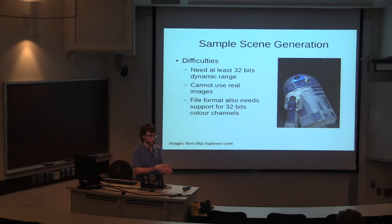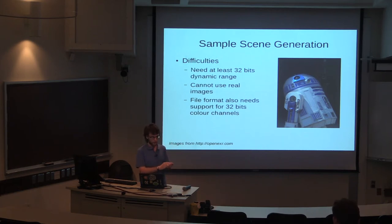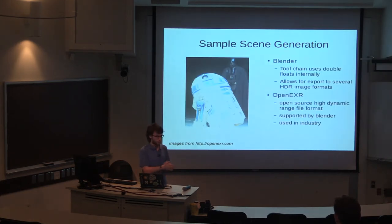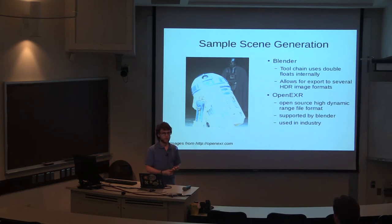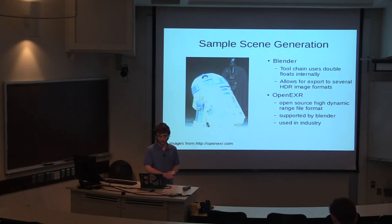For the sample scene generation, there were difficulties because there are no cameras currently that can capture this much information in a scene. You end up having to generate scenes from 3D models and can't use real-world images. Another issue was that the file format for this much information isn't a standard PNG or GIF, so we needed to use a format known as OpenEXR. The images shown here are stock sample images from their site, showing a varied amount of dynamic range.